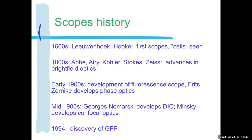In the 1800s there was a flurry of really important developments, including Ernst Abbe, Airy, Kohler, Stokes, and Zeiss — all for brightfield. Scopes were kind of a party trend at that point; scientists were using them, but rich people also used them at parties. There were some scopes made of pure gold. There were breakthroughs in physics in Europe where people came together and developed key components. Carl Zeiss and the Leica light companies were really important for the development of commercial microscopes.